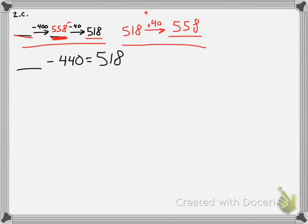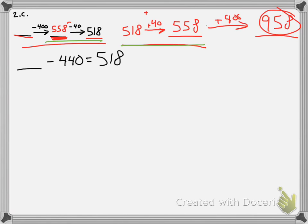Then I do 558 plus 400, which gives 958. Coming back, I fill in the first blank with 958 — that's my answer.